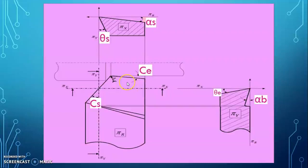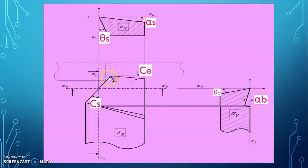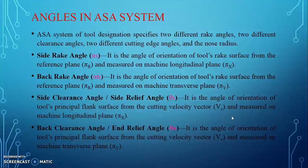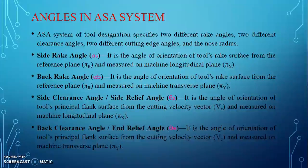So these are the six angles in the form of rake angle, relief angle, and cutting edge angle. One additional element in this geometry is where the two cutting edges are joined together with the help of a radius, called the nose radius. This is how we can define the different angles of the tool geometry in the ASC system.